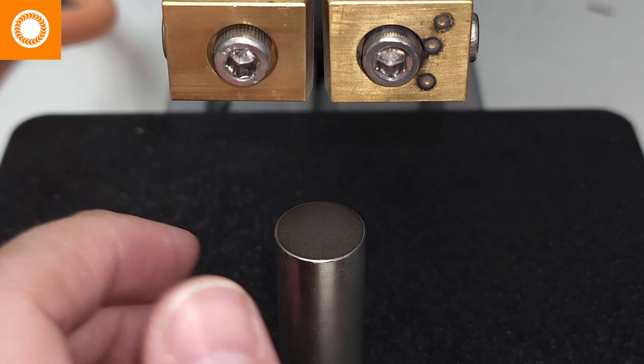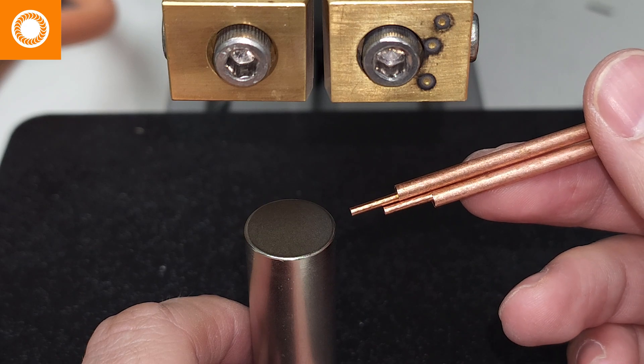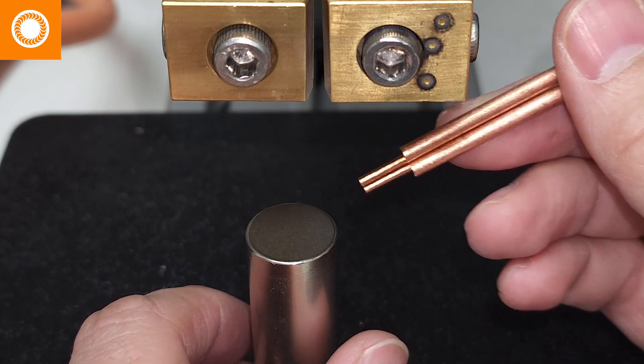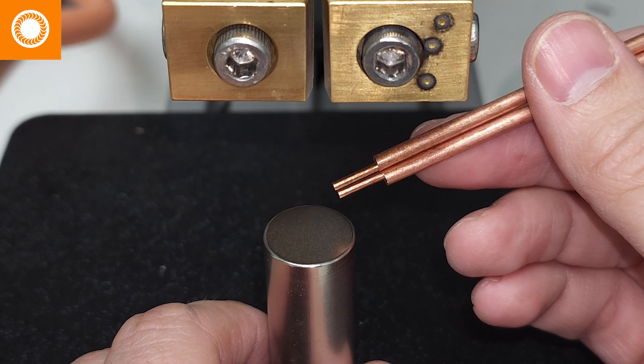For battery welds we recommend using our battery electrodes which have been milled down on an offset so that they can be seated right next to one another.